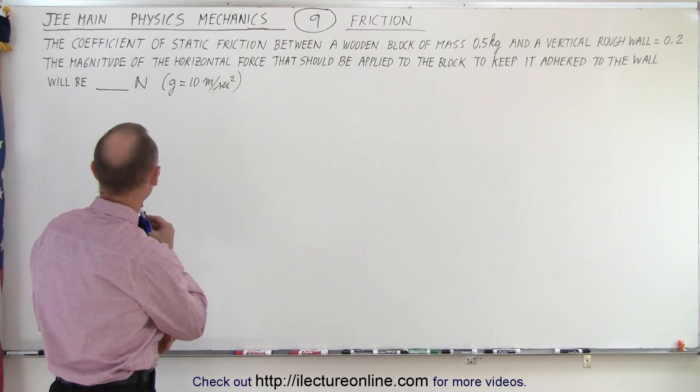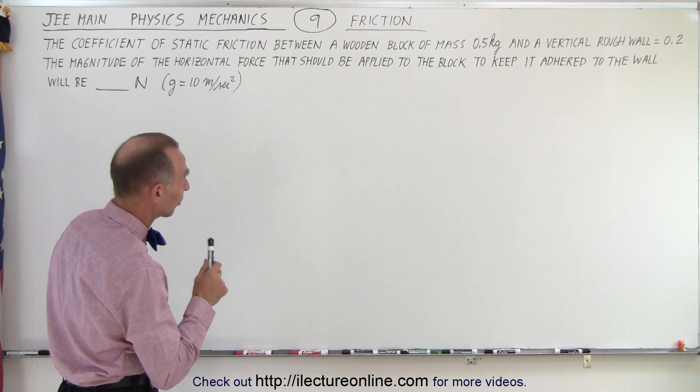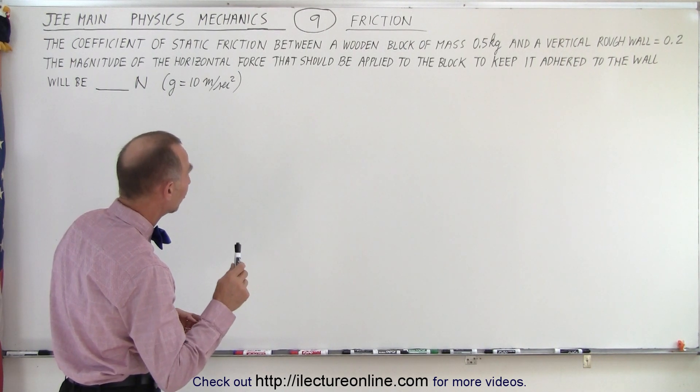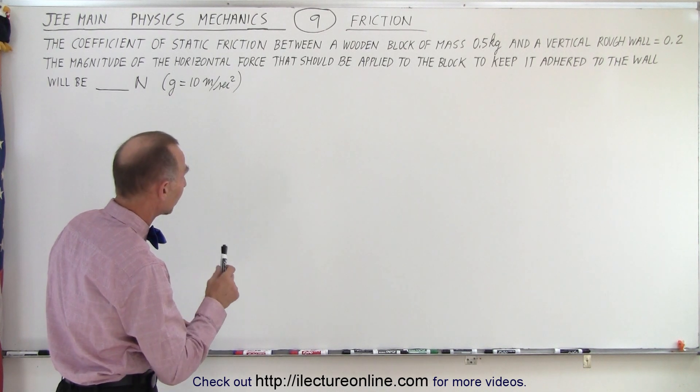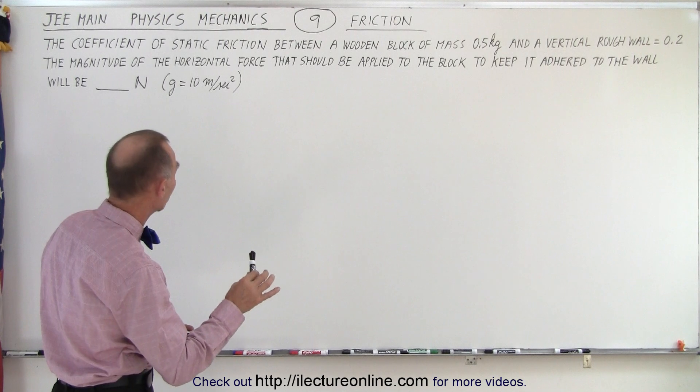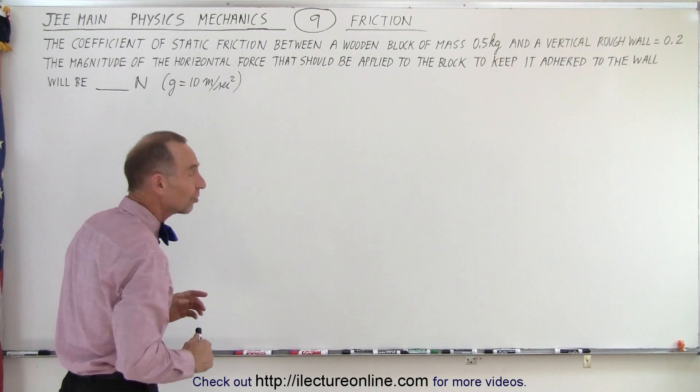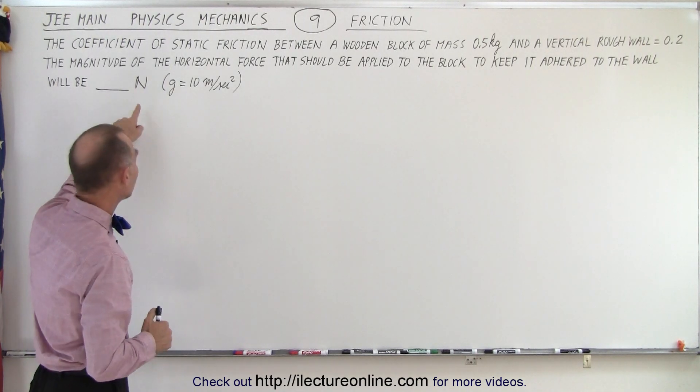It deals with friction. The coefficient of static friction between a wooden block of mass 0.5 kg and a vertical rough wall is 0.2. The magnitude of the horizontal force that should be applied to the block to keep it adhered to the wall will be a certain number of newtons with g equals 10 meters per second squared. So they're looking for a numerical value in newtons.